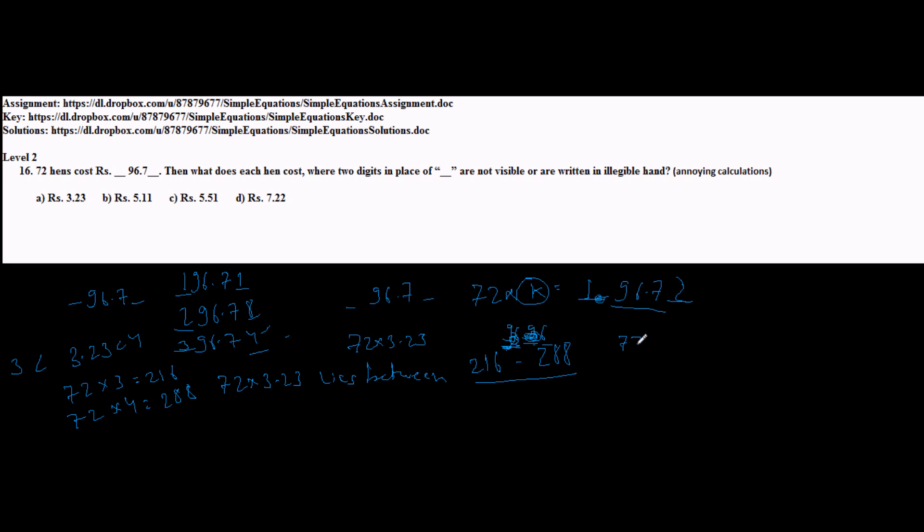Option B, I see 72 into 5 is 360, and 72 into 6 is 432. Yes, we have 396 in between them, so there is a chance of having 96 here. So option B or option C either could be my answer because both lie between 5 and 6.